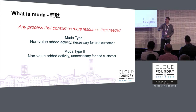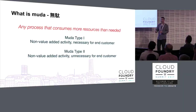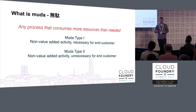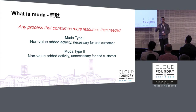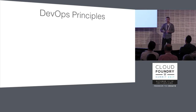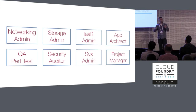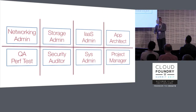There are two different types of waste. Type one is non-value-add activity, but still necessary for the end user — things like packaging your application, which you can eliminate through automation. The second is non-value-add activity that's unnecessary for the end user — and that's the stuff you absolutely need to remove from your organization. Lean started in manufacturing, but within DevOps communities it's become really impactful.